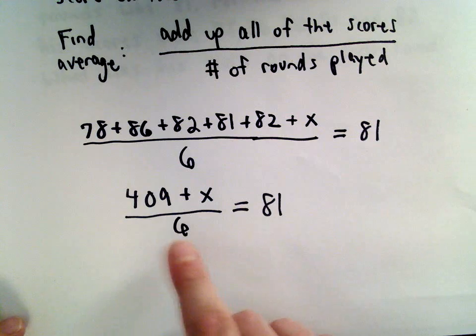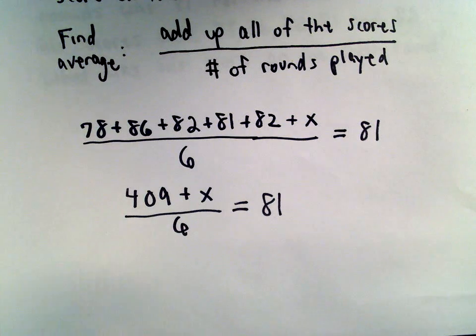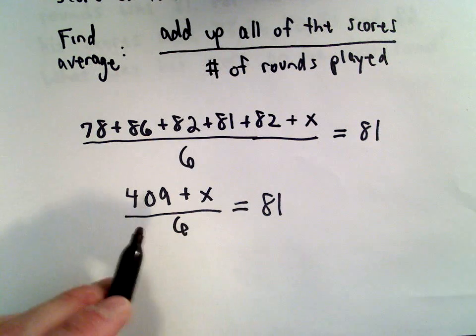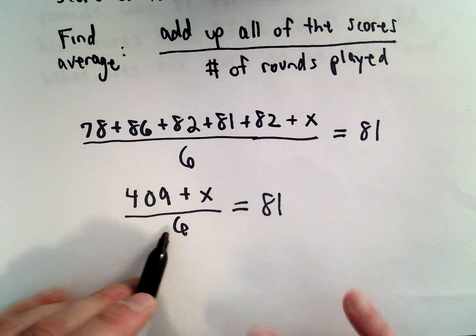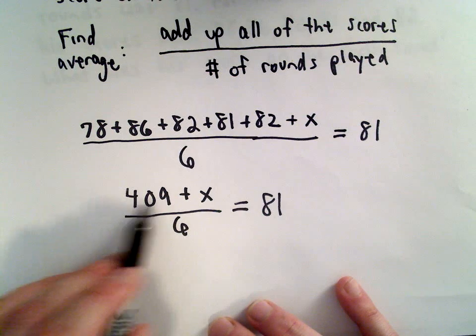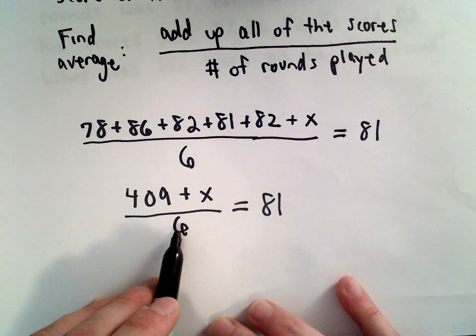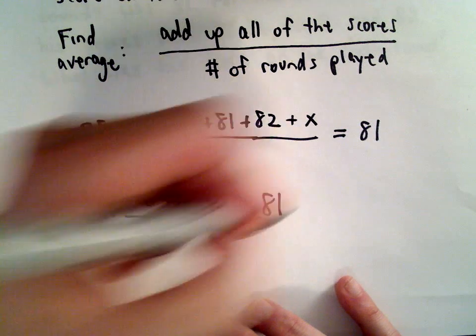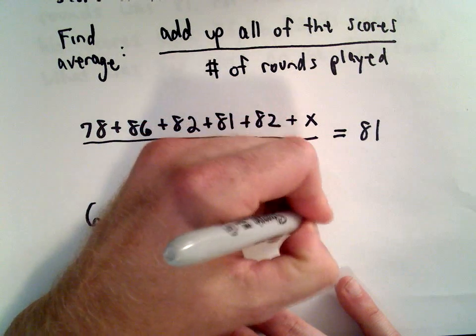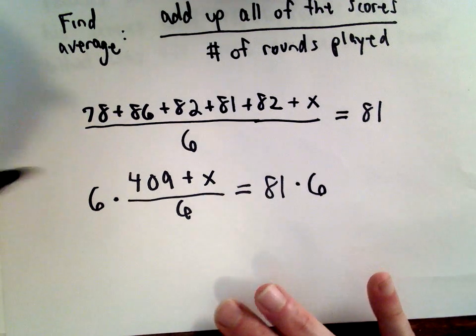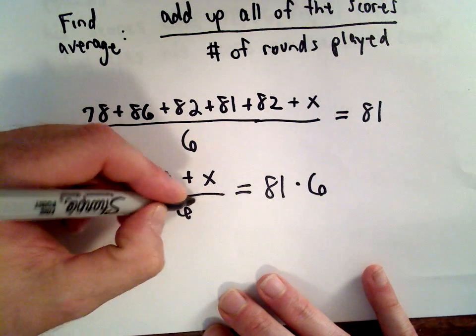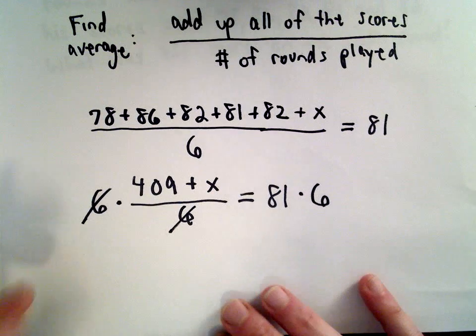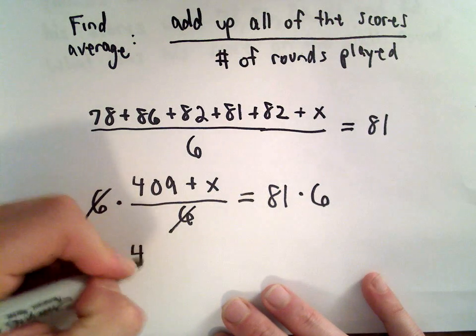I'm trying to solve this for X. That's my goal. I want to get down to where it says X equals some number. I'm going to get rid of the six. On the left side, we have this 409 plus X being divided by six. I can multiply the left side by six, and also I have to multiply the right side by six. The sixes are going to cancel out. That's the whole reason for doing that.